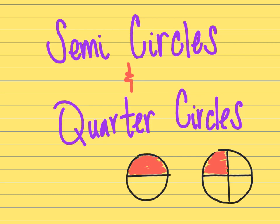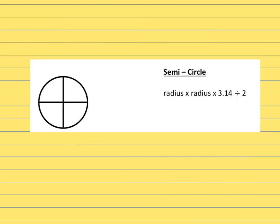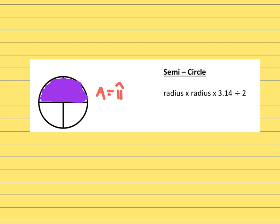This video is going to go over semicircles and quarter circles. A semicircle just takes up half the amount of space of a whole circle, and a quarter circle means one-fourth. For a semicircle, we're going to take radius times radius times pi and then divide it by two. The area for a whole circle is pi r squared, but we have to divide by two because we're only looking at half — a semicircle is only half of a full circle.